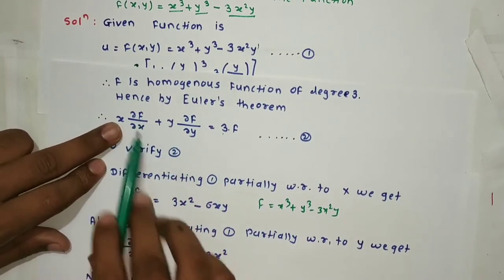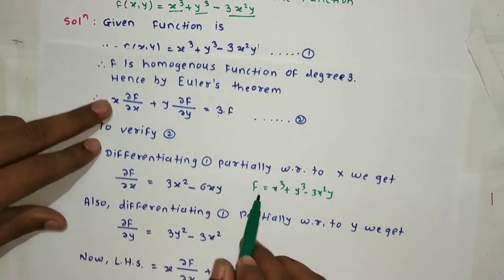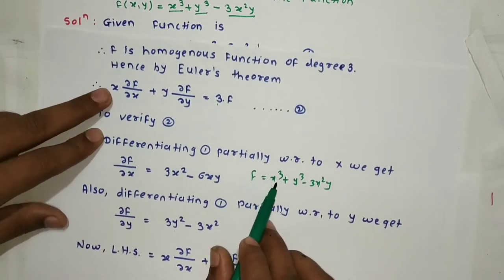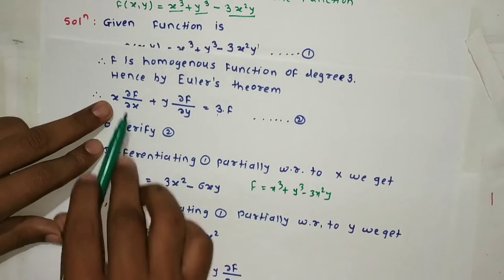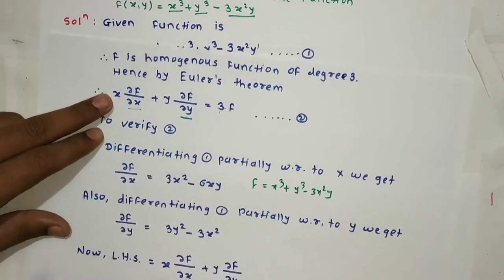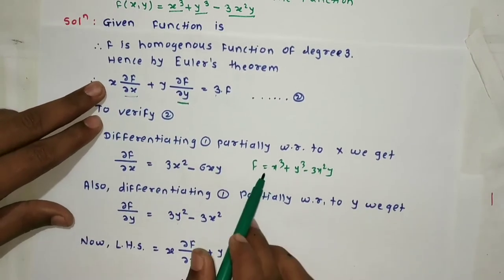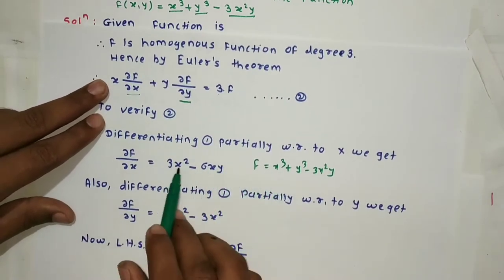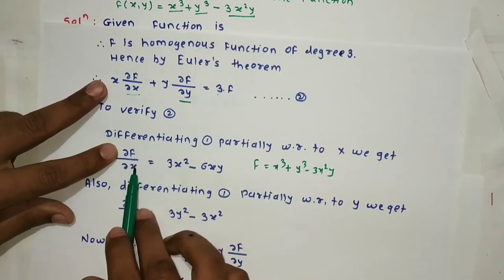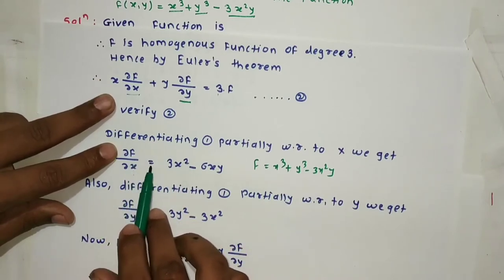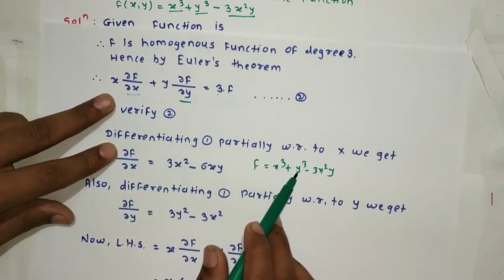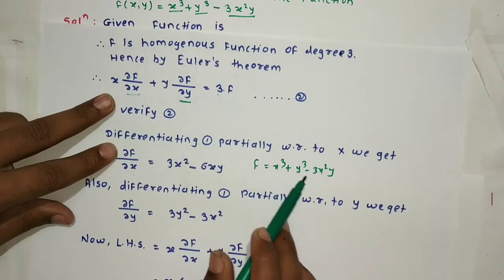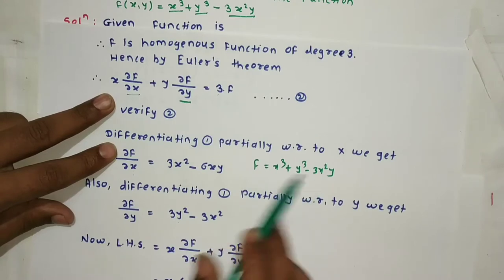So f is given as: f = x³ + y³ - 3x²y. Now calculate the partial derivative with respect to x. ∂f/∂x = 3x² + 0 - 6xy = 3x² - 6xy, since the y³ term gives 0 when differentiated with respect to x.